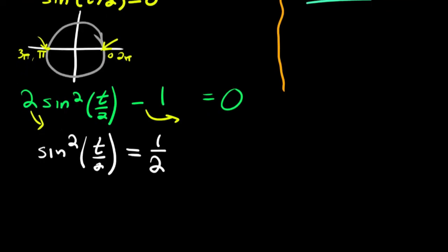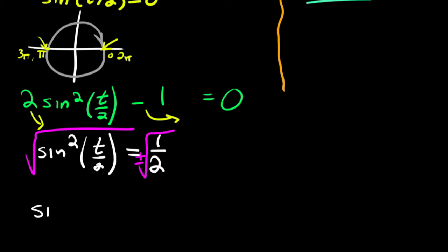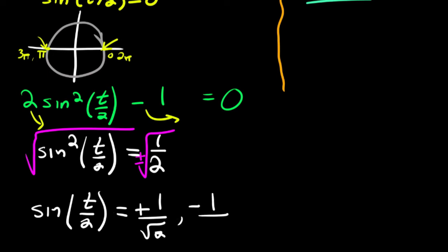Now the question is where does sine squared equal 1/2? Let's get rid of the square by taking the square root of both sides — but remember it's plus or minus. So we want to know when sine of t over 2 equals positive 1 over root 2 or negative 1 over root 2. Going back to our unit circle, when sine equals ±1/√2, the reference angle is pi over 4.